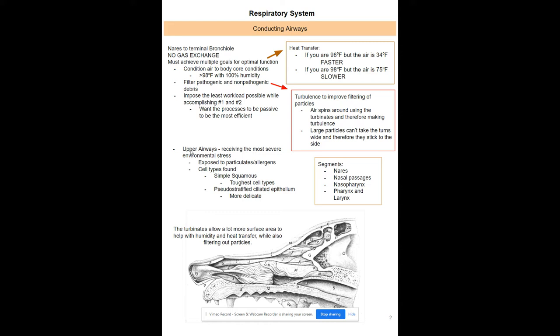Basically, you're filtering air through turbulence and treating the air — humidifying and heating it. You have structures called turbinates, which are scroll-like structures inside your nasal cavity. These have a ton of blood vessels in them, and that's where the humidity and heat come from — heat transfer from your blood vessels. Heat transfer occurs faster when there's a bigger temperature difference.